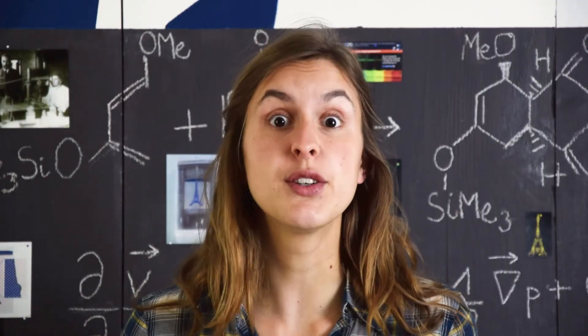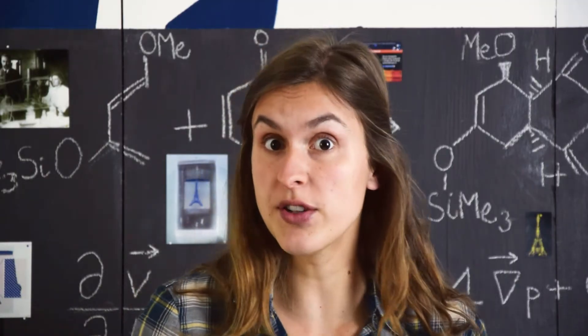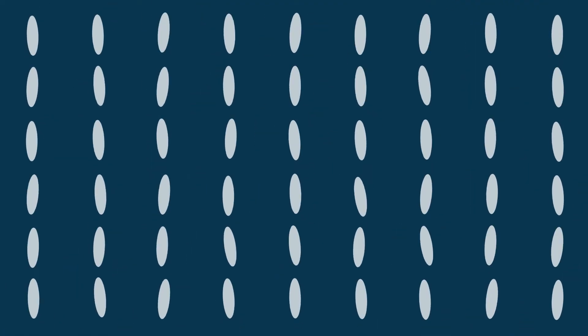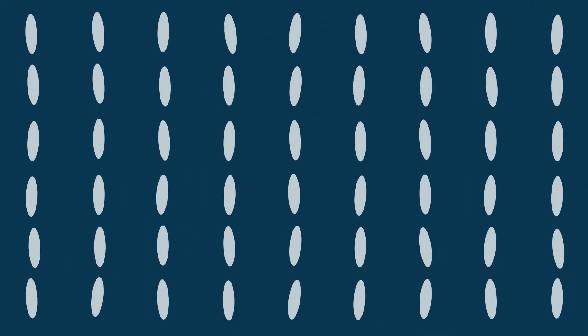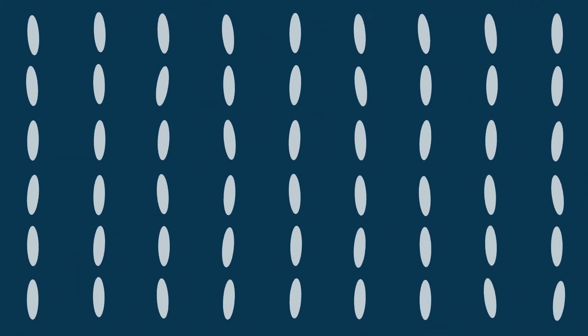But what would happen if molecules were shaped like rods instead of spheres? In the usual liquid, the molecules' positions and orientations are random — that's why we call it an isotropic liquid. If we lower the temperature, we get a liquid crystal state, where the positions are still random but not the orientations. If we decrease the temperature even more, we have a crystalline solid, where both positions and orientations are well defined.